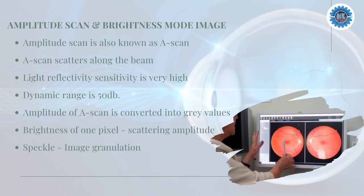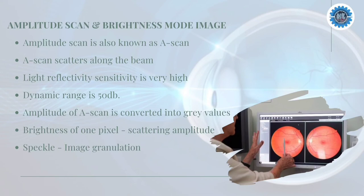The third principle of OCT is the Amplitude Scan and Brightness Mode Image. The envelope scan of the interference signal detected is called the Amplitude Scan, also known as the A-Scan — the same terminology as in Ultrasound Sonography. The A-Scan is a depth profile of scatterers along the beam. The first surface reflection of the tissue forms the highest peak, and different layers in the tissue may be responsible for different amplitudes. Because sensitivity for light reflectivity is very high, amplitude scans typically cover a dynamic range of more than 50 dB.